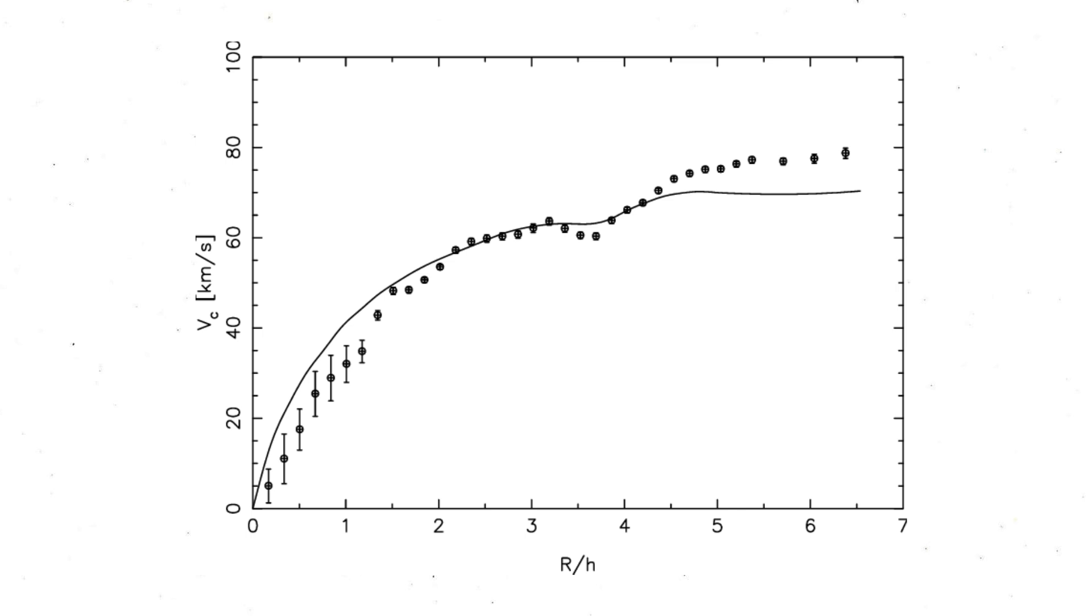Moreover, MOND explains Renzo's rule, by which features in the baryonic mass distribution and features in the rotation curve are strongly correlated. Again, there is no reason why physical dark matter should result in this correlation. For both of these cases, physical dark matter, which would account for most of the matter in galaxies, should clump by its own gravity, leading to deviations from these relationships.